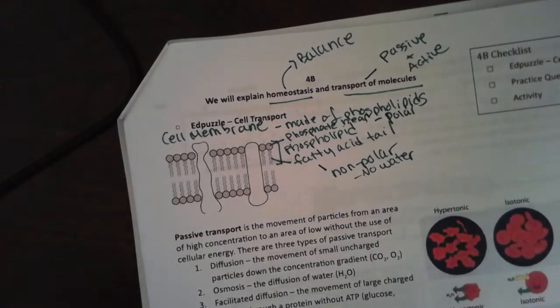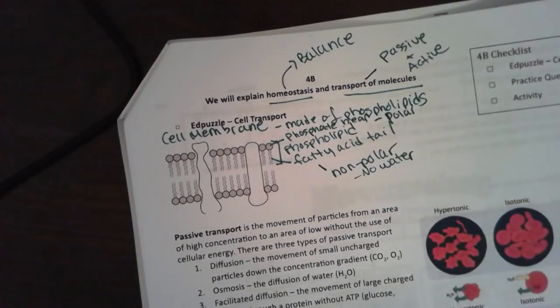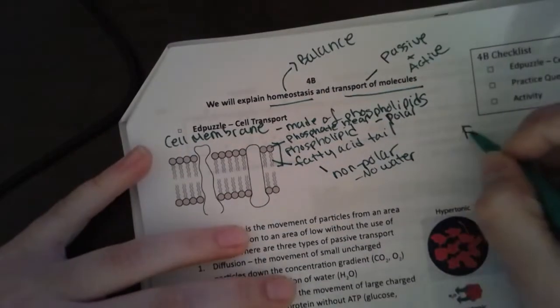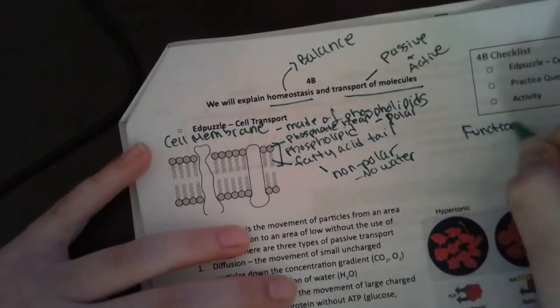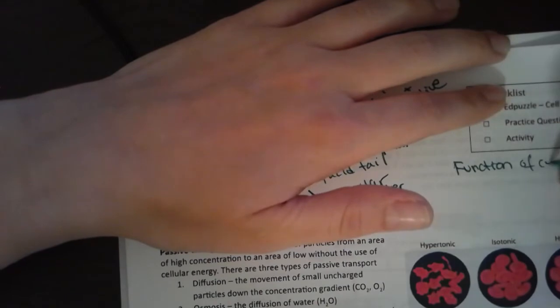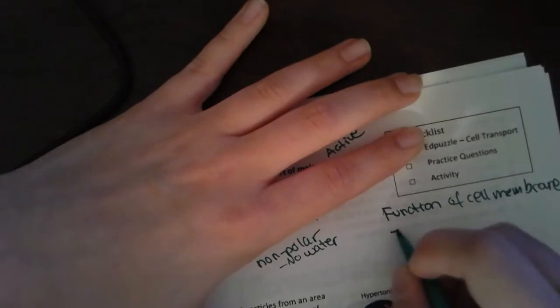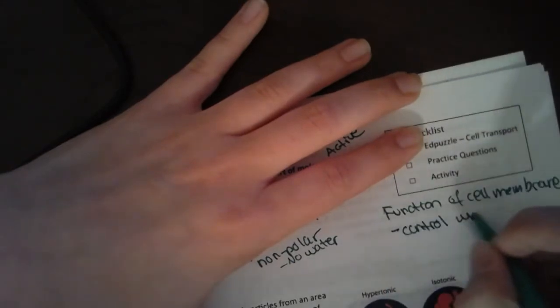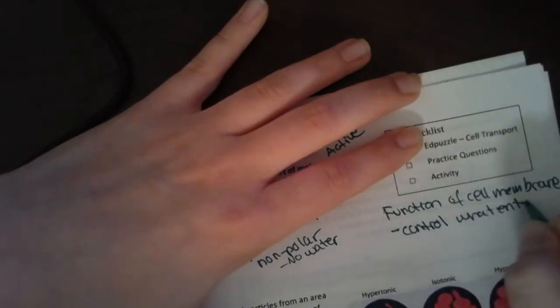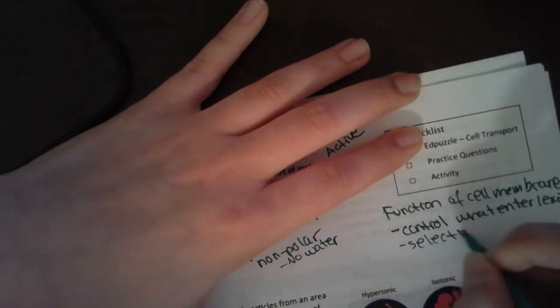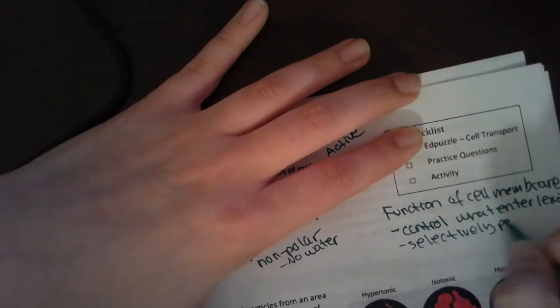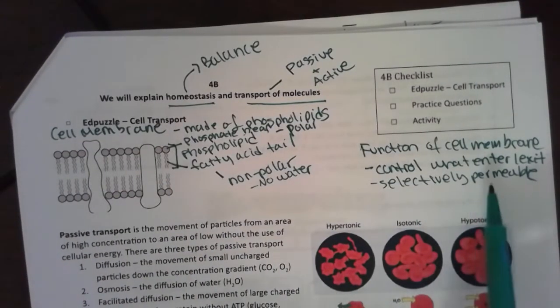The function of a cell membrane is to control what enters and exits the cell. We call this selectively permeable. That means that the cell membrane is selective about what permeates it, what goes through.